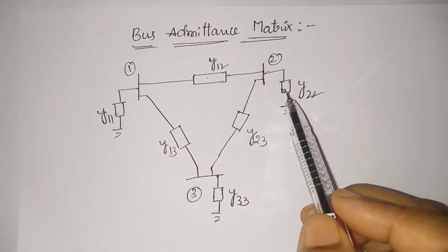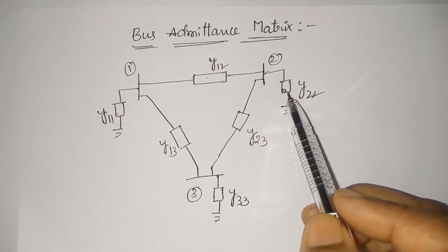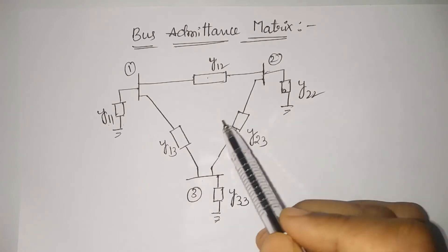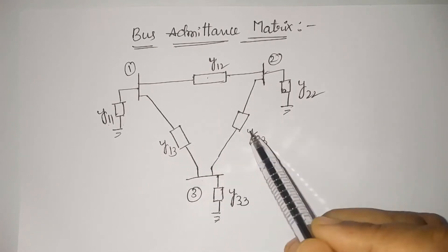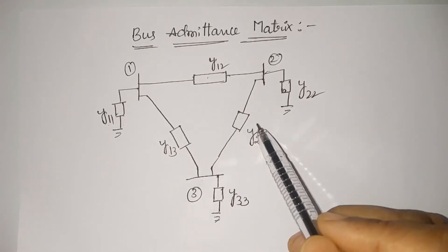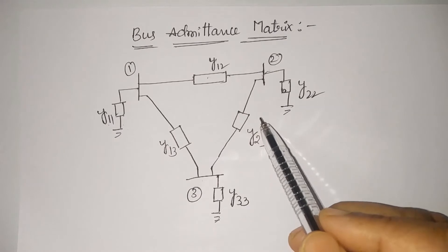Here we need to remember that the system is a symmetrical system. Symmetrical system means y12 will be equal to y21, and so on for the rest of the elements also. In order to obtain the Y-bus or bus admittance matrix, let us assume the bus voltages are V1, V2, and V3.